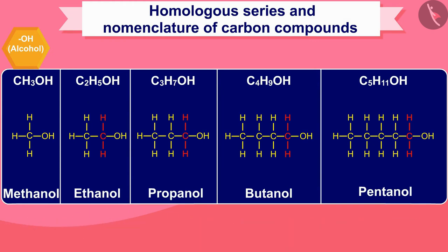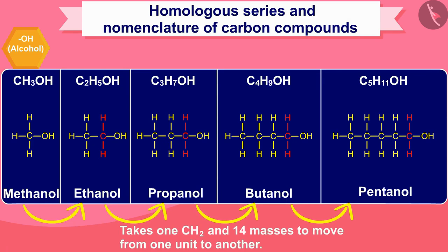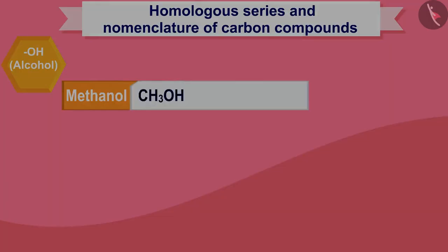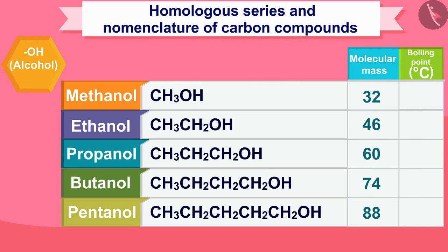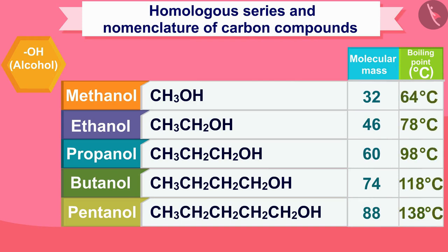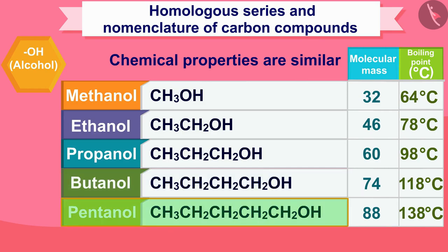You can form homologous categories by placing different functional groups in hydrocarbon chains. A series of compounds in which the same functional group substitutes for hydrogen in a carbon chain is called a homologous series. It takes 1 CH₂ unit and 14 mass units to move from one member to another. When molecular mass increases in a homologous series, there is a gradation in physical properties — melting point and boiling point increase. The chemical properties determined by the functional group remain the same throughout the homologous series.